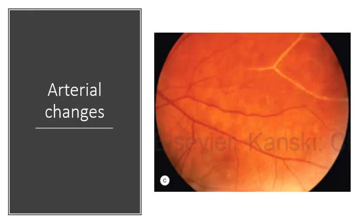Artery changes in pre-proliferative diabetic retinopathy include peripheral narrowing of the arteries, silver wiring — where it looks like silver wire has been inserted into the artery — and complete obliteration, where the vessel is missing and completely blocked with no blood getting through.